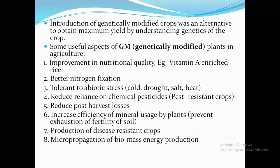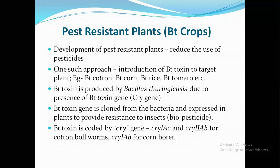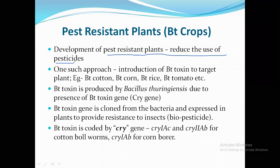Now let's move to specific genetically engineered modifications we can see in crops. Pest-resistant plants reduce the use of chemical pesticides. One such approach was the introduction of Bt toxin to target plants. Examples include Bt cotton, Bt corn, Bt rice, and Bt tomato — these kinds of plants have already been developed.